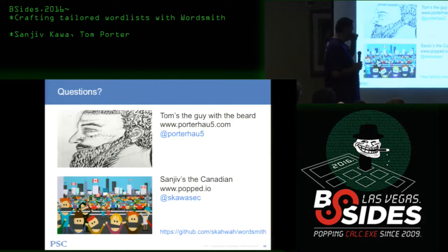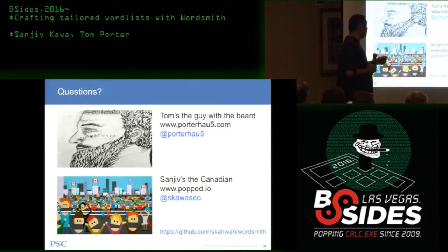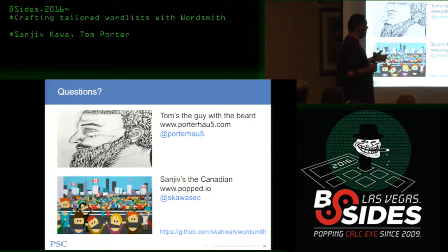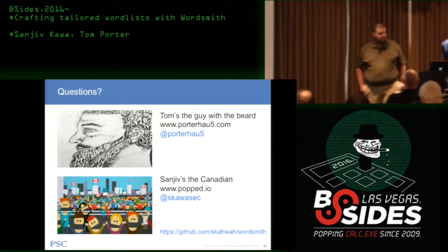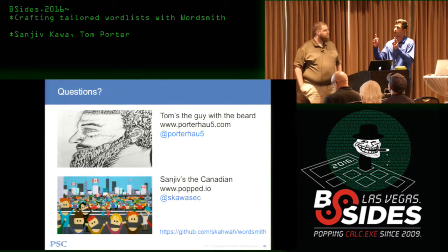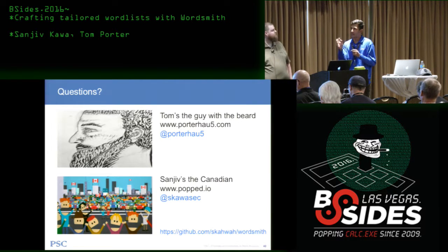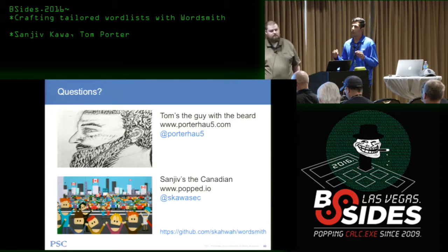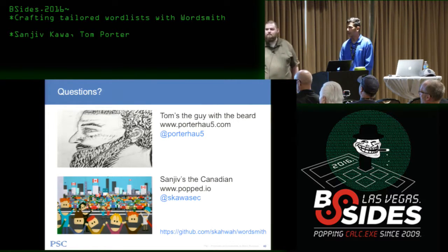The moderator asks: have you considered physical and geographical locations that consist of more than one name — like a place name with a space? For example, 'Sea of Something.' Does WordSmith take that into account, or does anything with a space become two different words?